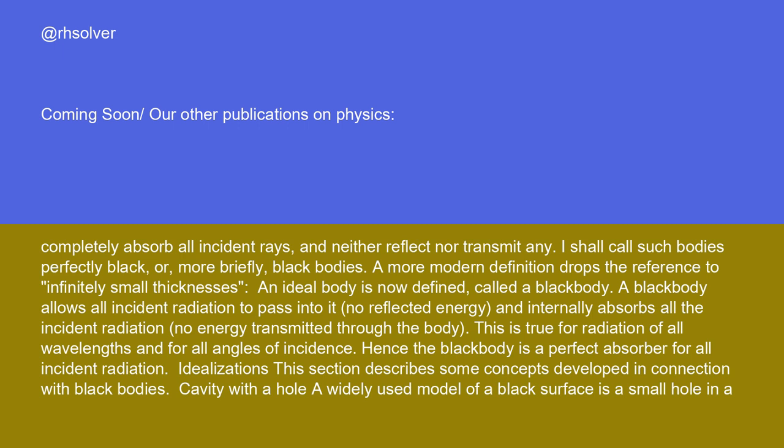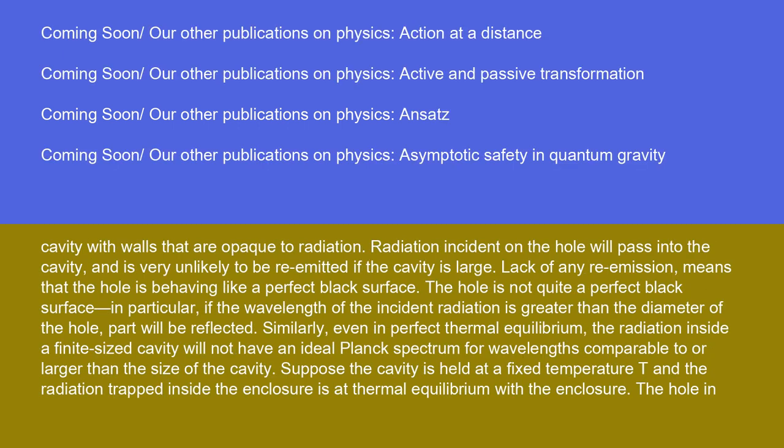A widely used model of a black surface is a small hole in a cavity with walls that are opaque to radiation. Radiation incident on the hole will pass into the cavity and is very unlikely to be re-emitted if the cavity is large. Lack of any re-emission means that the hole is behaving like a perfect black surface.